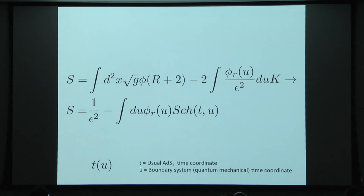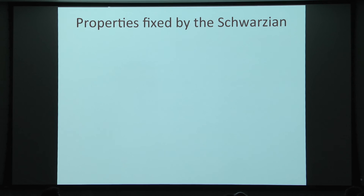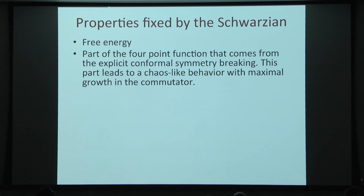In this system there appear to be two time coordinates: u, the field theory or boundary coordinate time, and t, which looks like a time more intrinsic to the system — measured by some internal clock. Many properties are fixed by this Schwarzian action. One is the free energy I already discussed, and the other is the part of the four-point function that comes from the explicit symmetry breaking. This leads in particular to chaos-like behavior with maximal growth in the commutator.